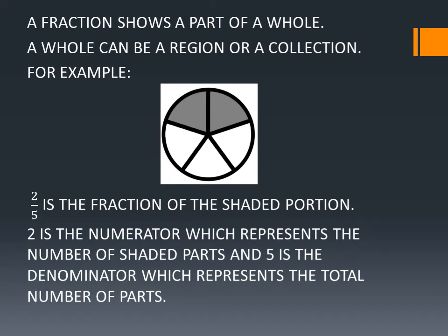A fraction shows a part of a whole. A whole can be a region or a collection. For example, in this figure, a circle has been divided into 5 equal parts and 2 parts out of 5 are shaded. So, 2 by 5 is the fraction of the shaded portion, where 2 is the numerator which represents the shaded parts and 5 is the denominator which represents the total number of parts.